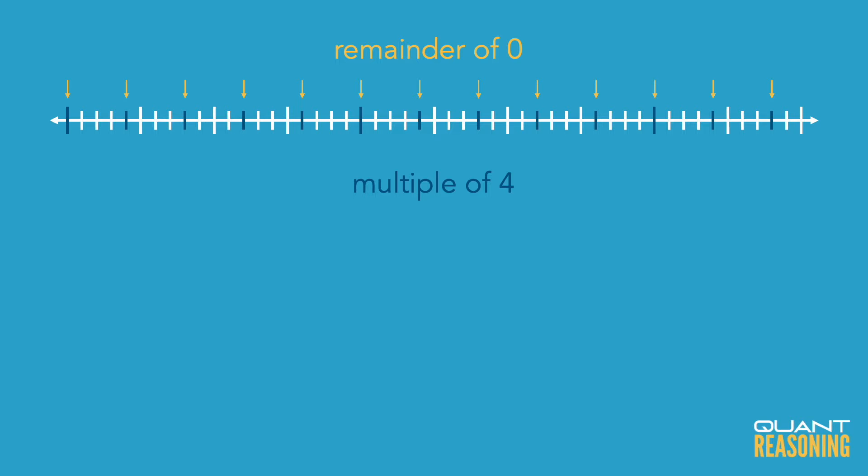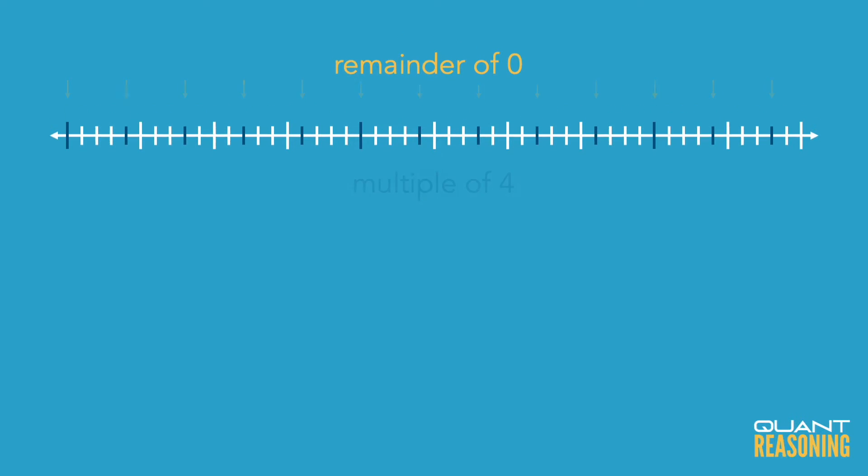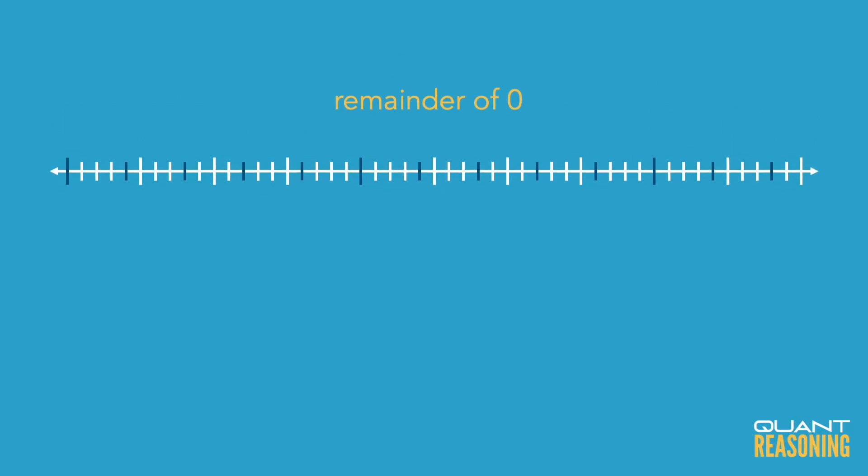And again, the cycle repeats: remainder 1, remainder 2, remainder 3, remainder 0, remainder 1, remainder 2, remainder 3, remainder 0, and so on.